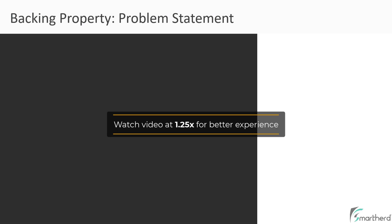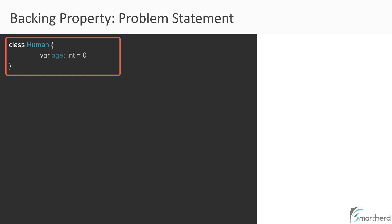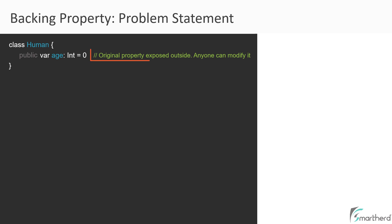Let us start with what is backing property and what problem does it solve? Suppose we have a class Human, and inside this class we have a property of age. Now in Kotlin, by default, a property is public in nature — even if you don't specify it as public. Since this property is public, it is exposed outside this class of Human, so anyone having access to its class object can modify the value of the age property.